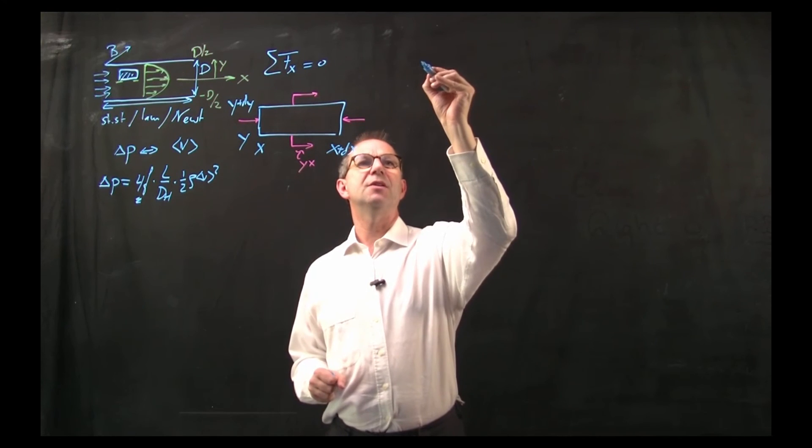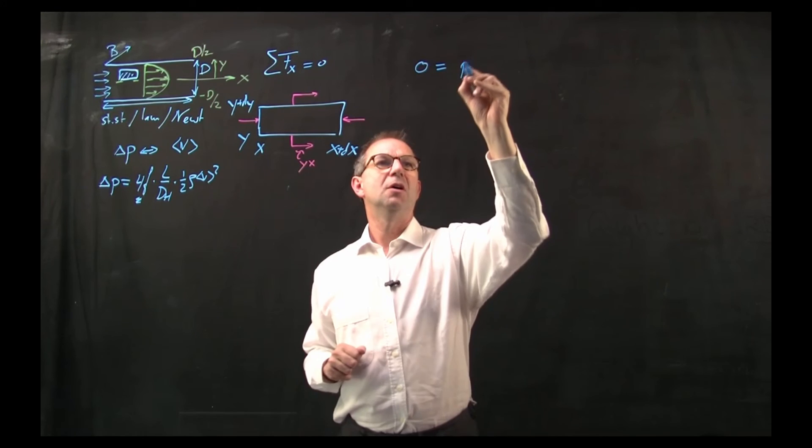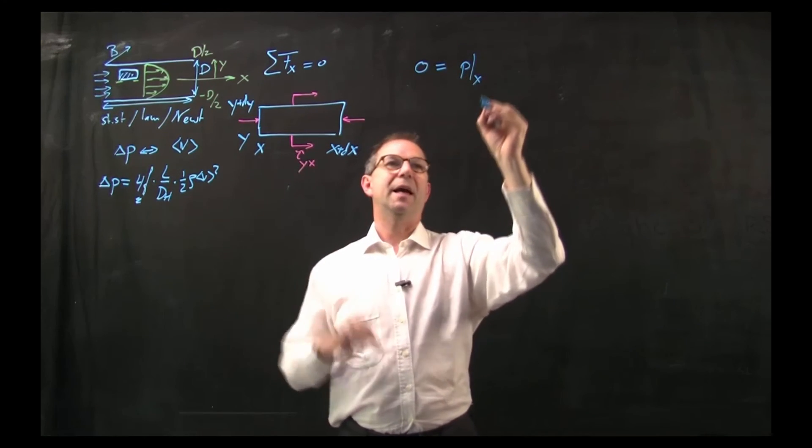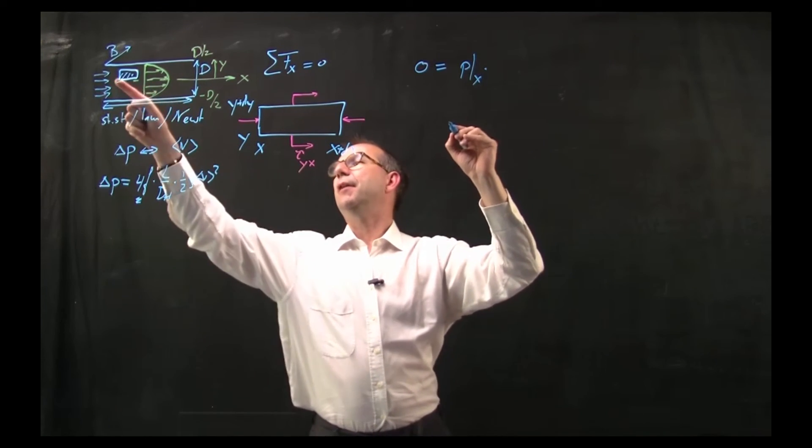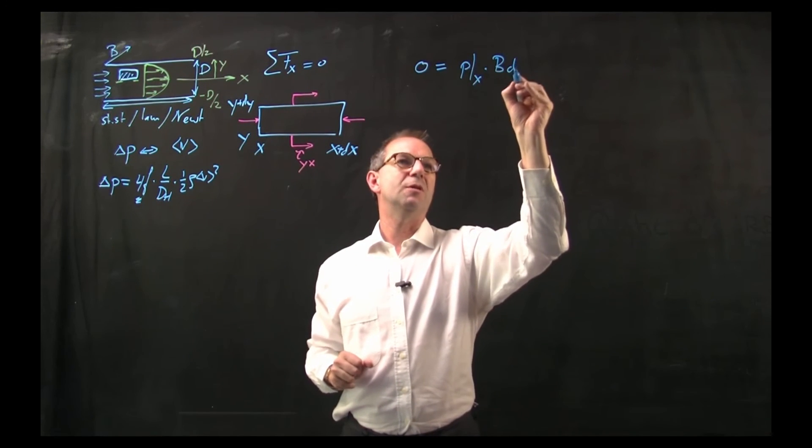So force balance is zero and I just equate all the forces. First, pressure on the left side, x times the area, area is B times the height, this height B times dy.